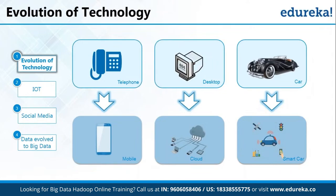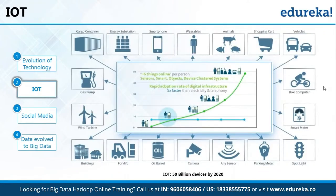Let's focus on various other factors behind the evolution of data. IoT connects your physical device with the internet and makes the device smarter. Nowadays we have smart ACs, TVs, and other smart devices. For example, a smart air conditioner monitors your body temperature and the outside temperature and accordingly decides the room temperature. To do this, it accumulates data from the internet through sensors monitoring body temperature and surroundings. So from various sources, it fetches that data and decides the temperature. Because of IoT, we are generating a huge amount of data.